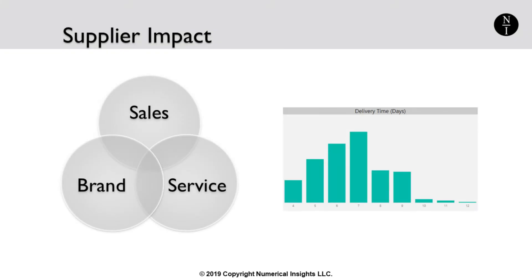Suppliers can make or break your business because they impact your sales, customer service levels, and company reputation. Using data analysis can help guide you in making decisions to minimize their impact. Most companies base their inventory calculations on the supplier's promised delivery time, but you can see from this video that it's a good idea to track the real delivery times and how much they vary.